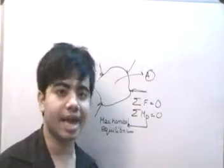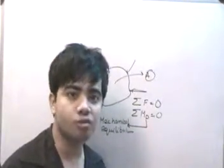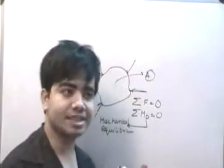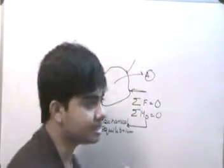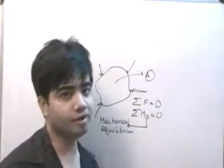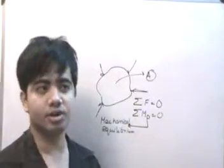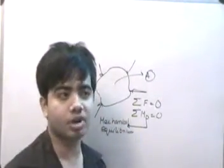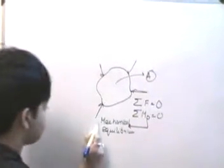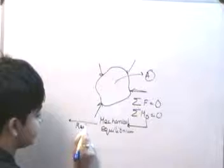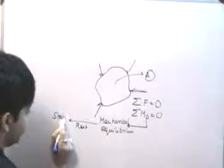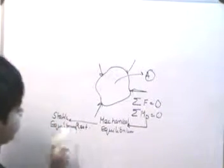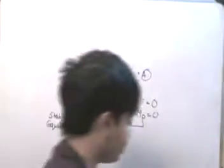Static equilibrium is a particular case of mechanical equilibrium, where the body doesn't move with a constant velocity either — that is, the body is at rest. Mechanical equilibrium means there can be two possibilities: number one, the body is at rest; number two, it moves with a constant velocity. Static equilibrium ignores the second condition — it can't move with constant velocity, and it is essentially at rest.